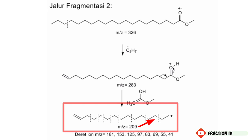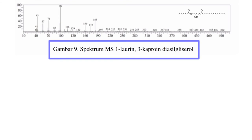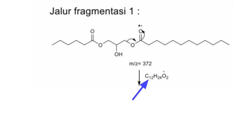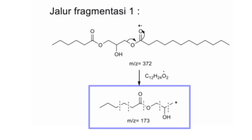Berikut spektrum MS dari 1-laurin-3-kaproin diasil gliserol. Senyawa ini berbeda dari sebelumnya yang tadinya cuma ester; di sini terdapat gugus esternya 2 kali, lalu di tengahnya ada gugus hidroksil. Bagaimana pembelahannya? Kita lihat jalur fragmentasi pertama, di mana seperti biasa terjadi pemutusan di metil ini, yang memberikan 2 elektron ke oksigen, lalu ikatan rangkap duanya ini 2 elektron diberikan ke oksigen, sehingga C₁₂H₂₄O₂ menjadi radikal, dan yang positif terbaca sebesar 173 m/z. Lalu terjadi pembelahan lanjutan di mana pemutusan metilnya secara berkelanjutan, mulai yang pertamanya 159 m/z sampai ke sini yang terbaca di spektrum masa sebesar 43 m/z.